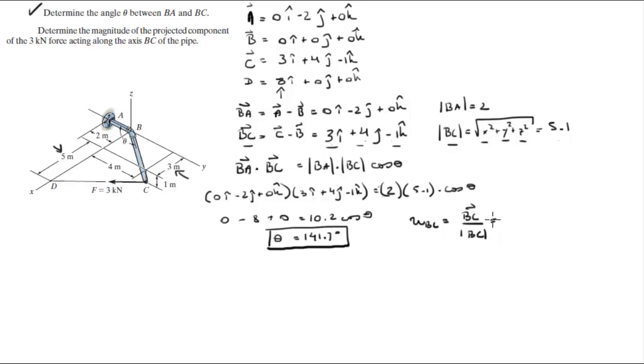So you divide the three values by 5.1 and you're going to get that this is equal to 0.588i plus 0.784j minus 0.196k.